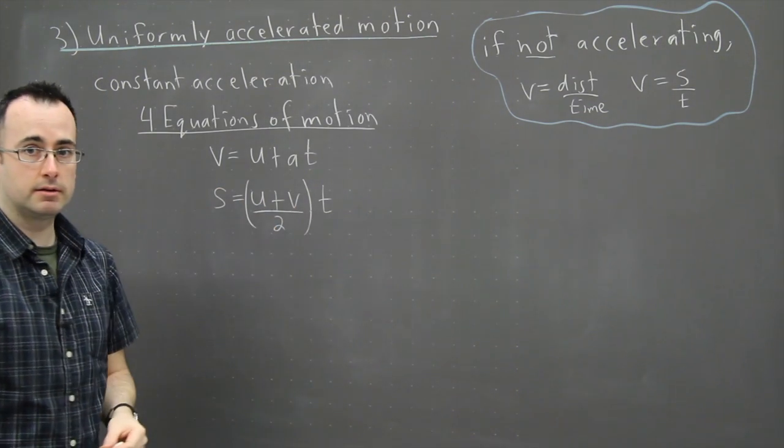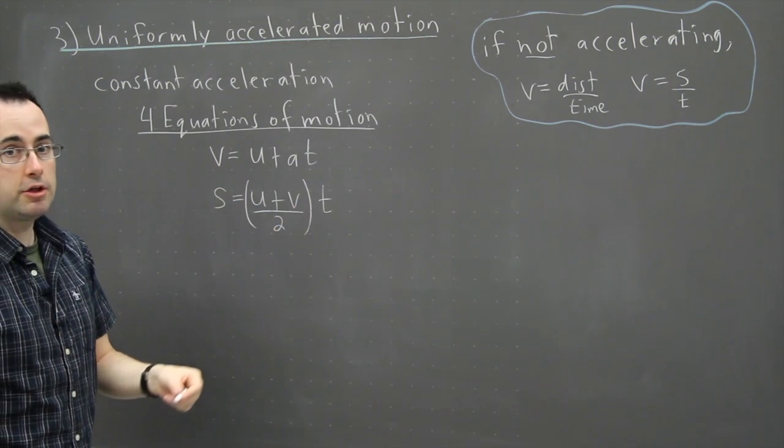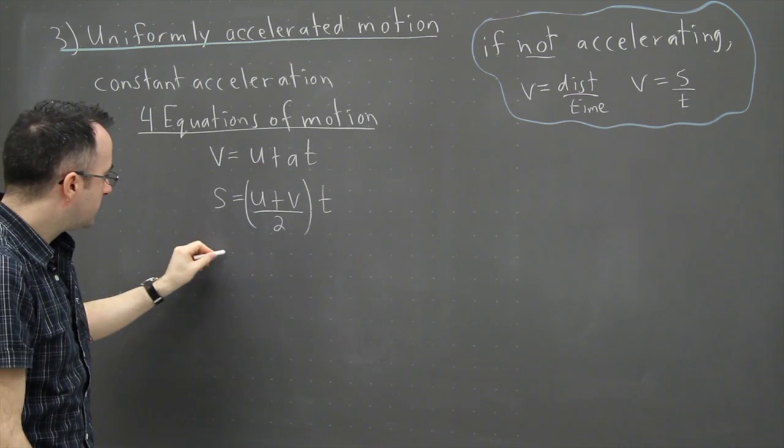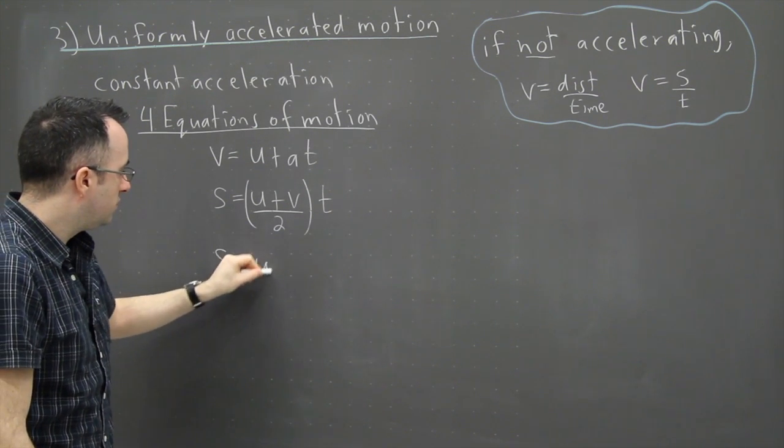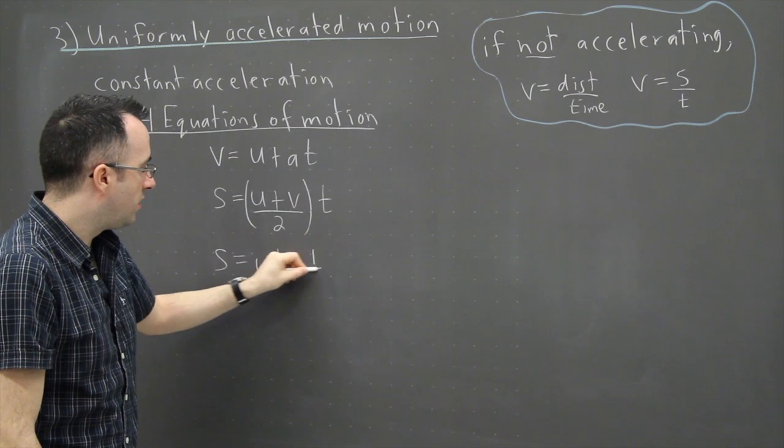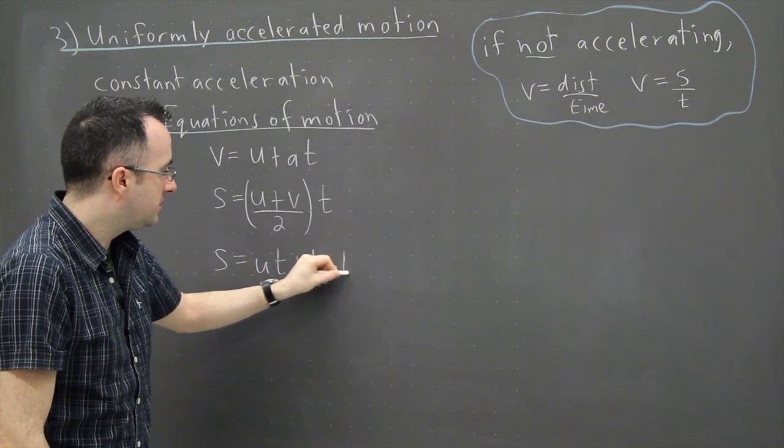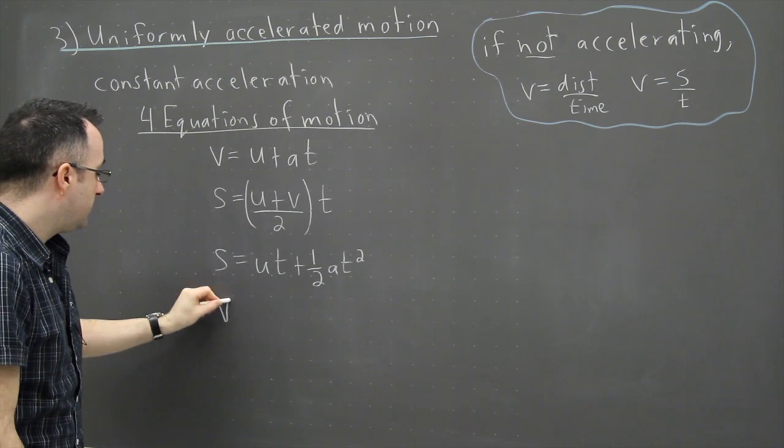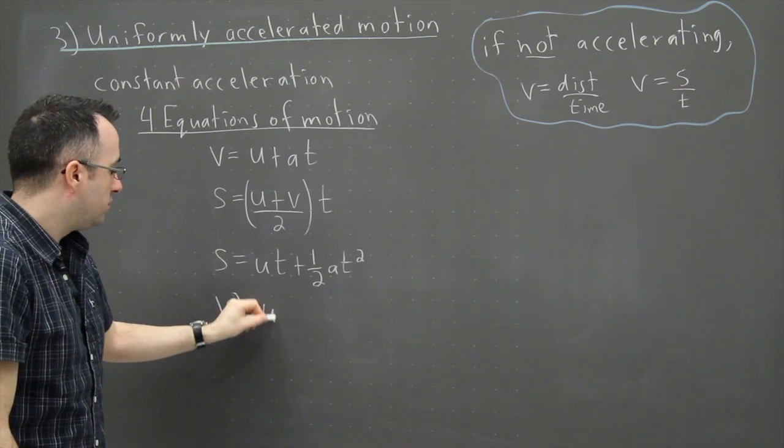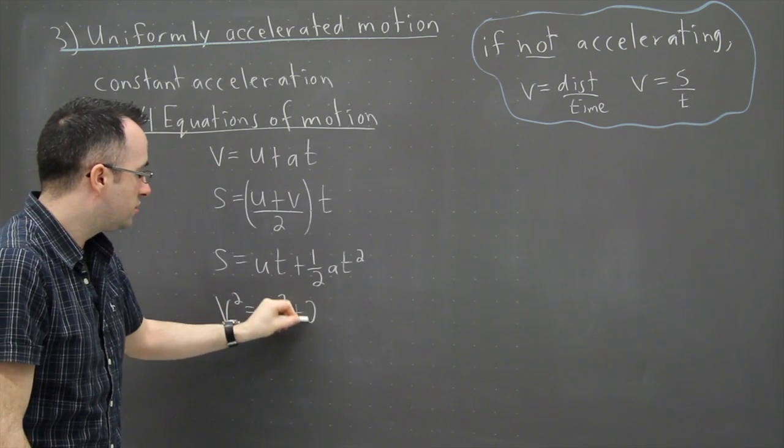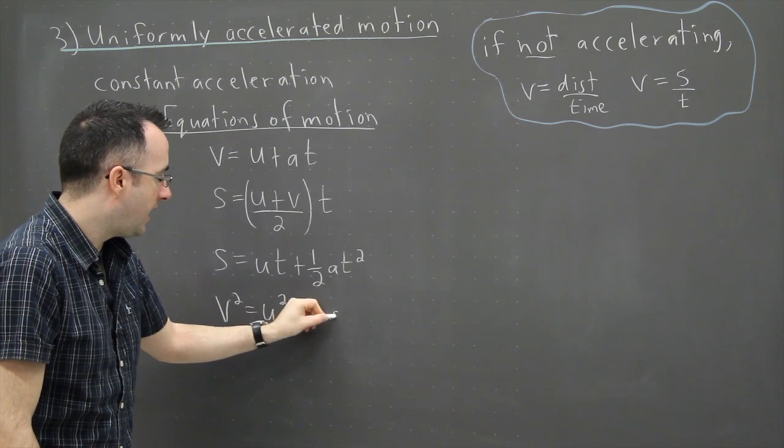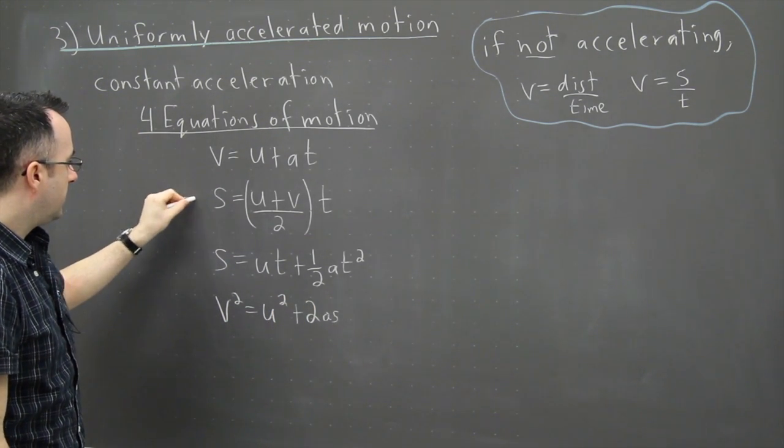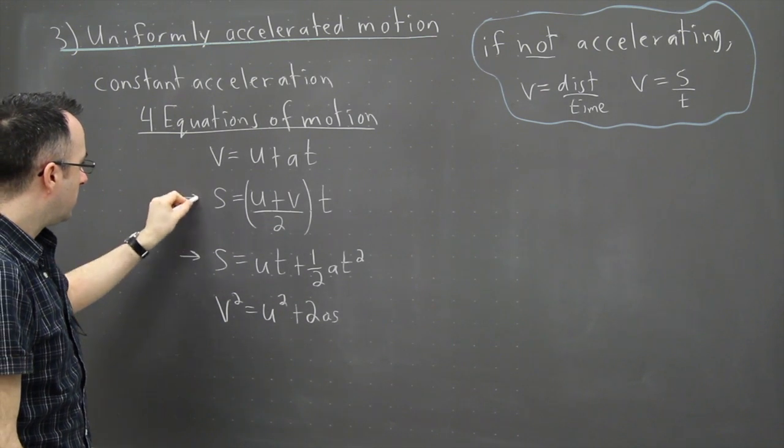Sometimes we put a little bracket here. And then we have a third one. And that one is this one right here: S equals UT plus 1 half AT squared. And then we have a final one, which is V squared equals U squared plus 2AS. Now these three right here are on your equation sheet or on your data booklet.